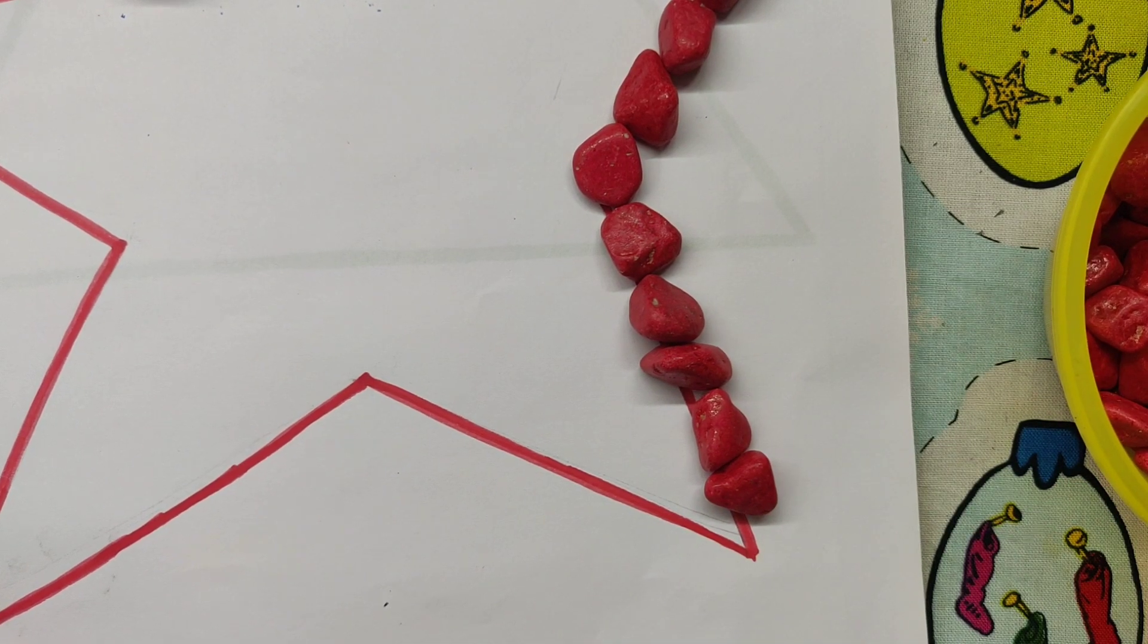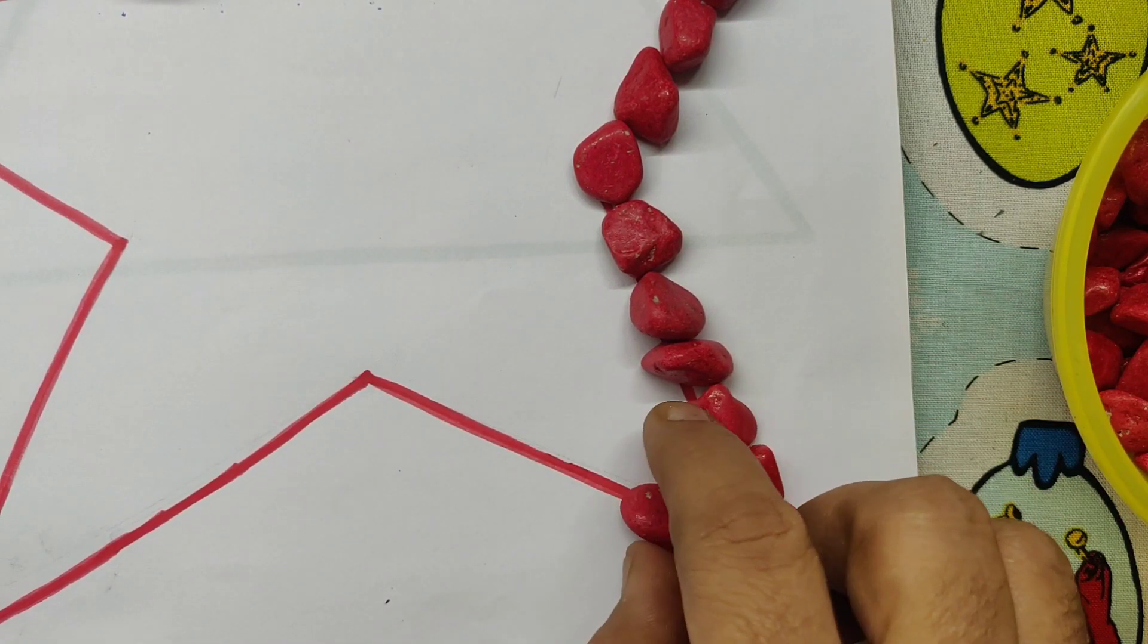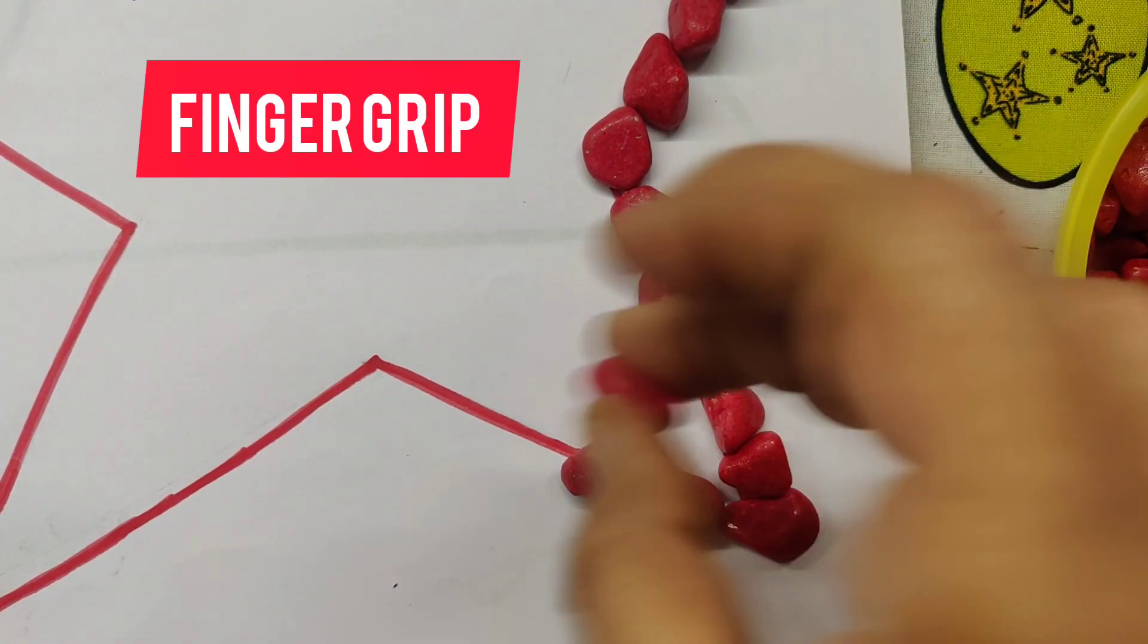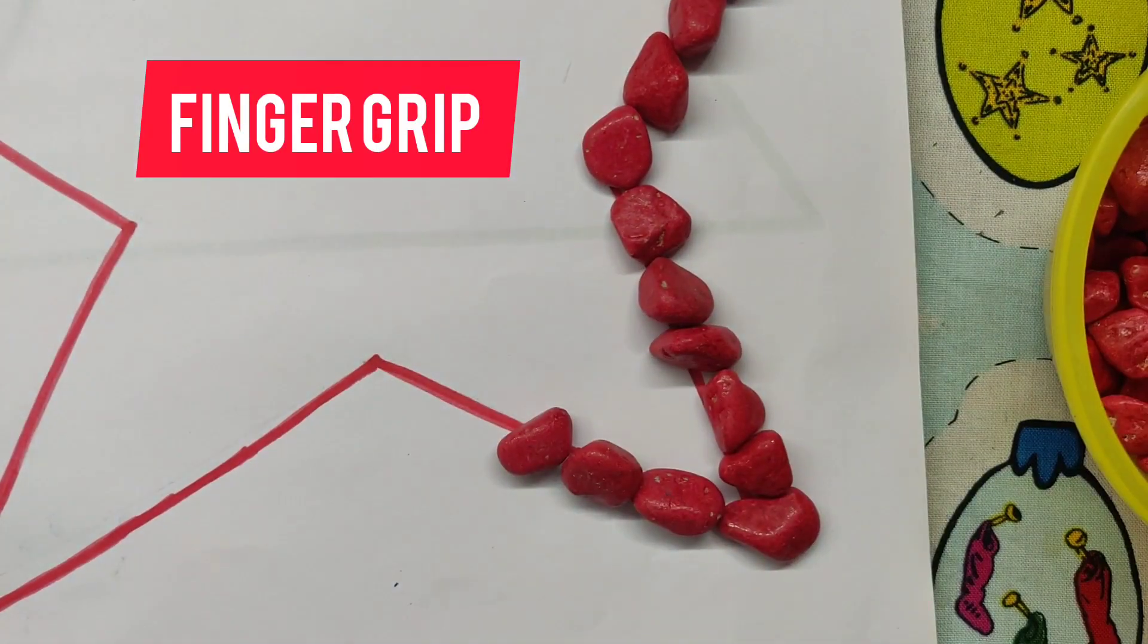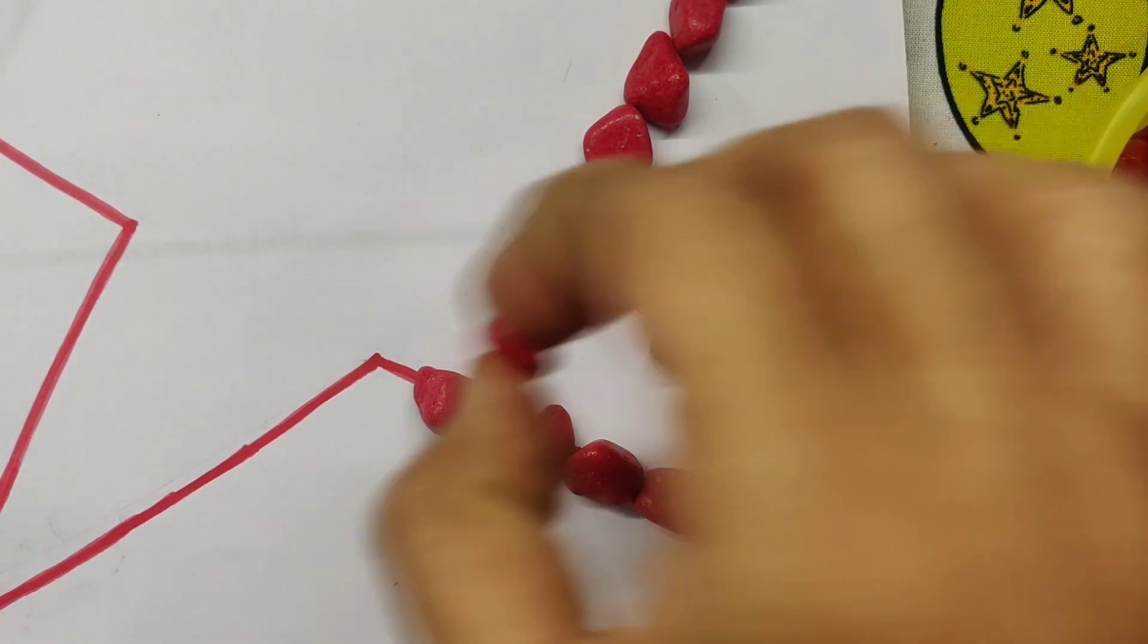What color is this? Red color. Red color pebbles, red color star. We will arrange the pebbles along the line.